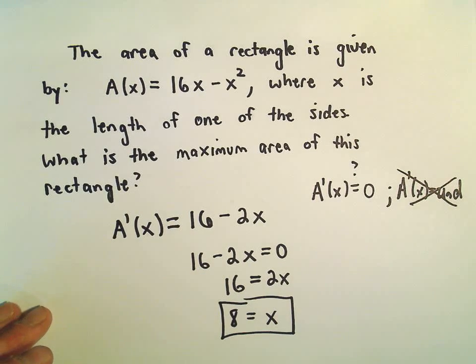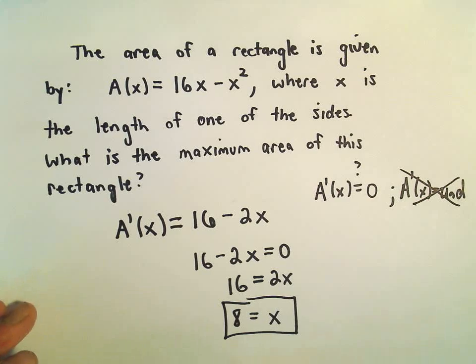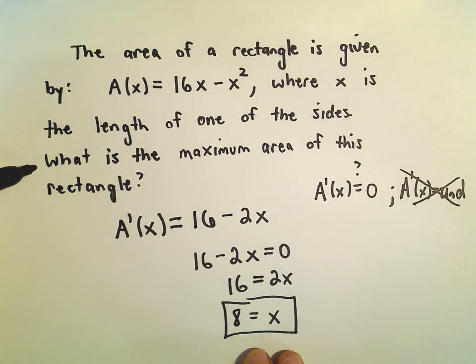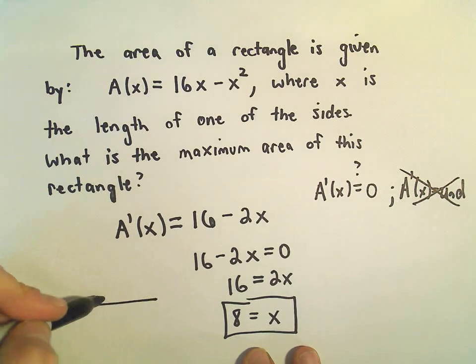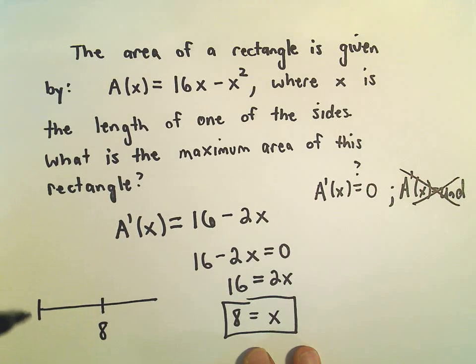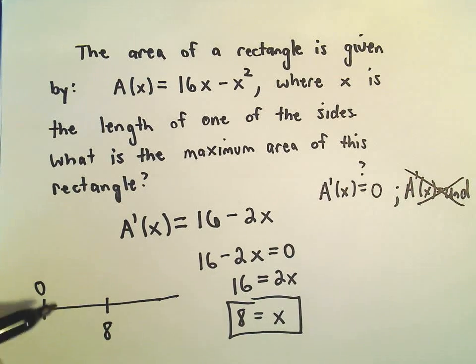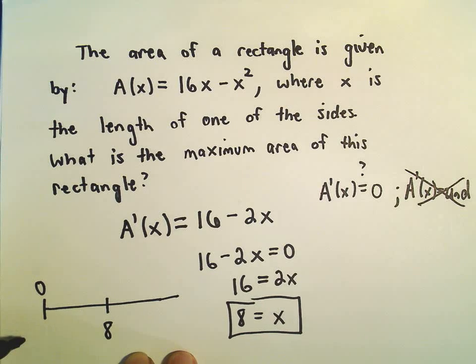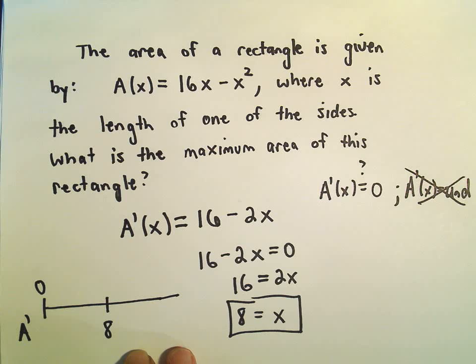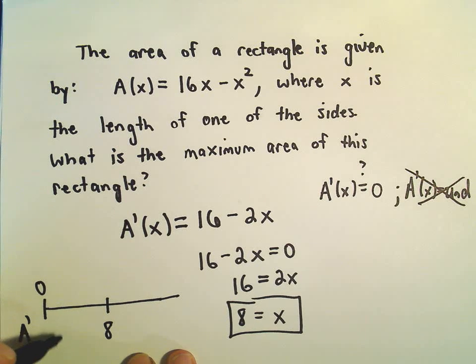And now, you can kind of assume, if this question's phrased correctly, that's the maximum. But let's just check. So, it doesn't make sense to go below 0, a length of 0. Then you don't have a rectangle. It certainly can't be negative. But what I'm going to do is I'm going to plug this into the derivative, and I'm going to think about the sign when I plug it into the derivative. So I'm going to take a number between 0 and 8.